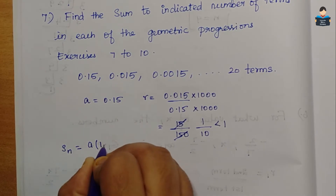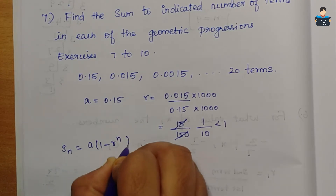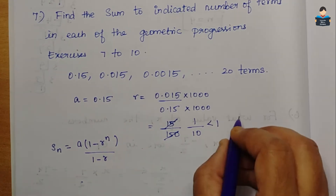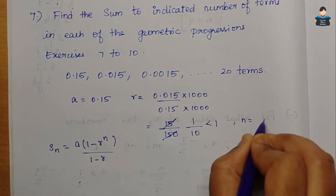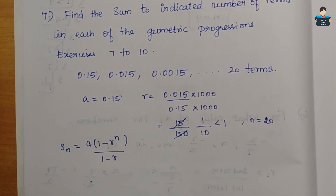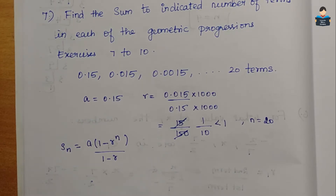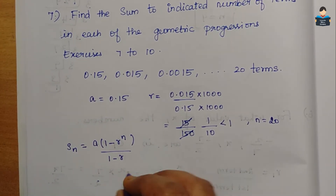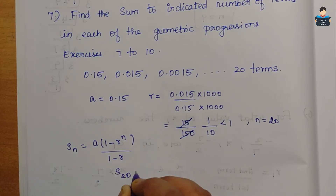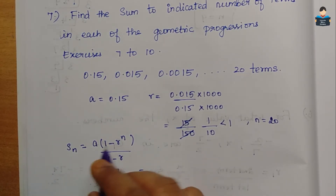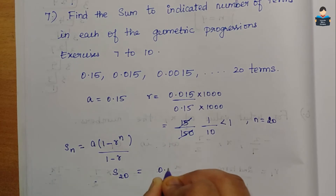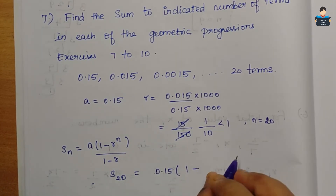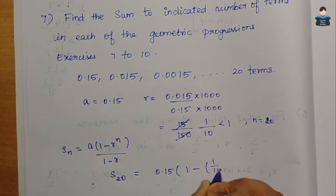Since r is less than 1, we use the formula: Sn = a × (1 − r^n) / (1 − r). Here n = 20 terms. So we find S₂₀. Substituting: a = 0.15 and r = 1/10.